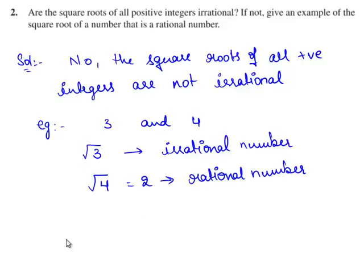Therefore, the square roots of the positive integers which are perfect squares are rational numbers. That is, the square roots of all positive integers are not irrational.